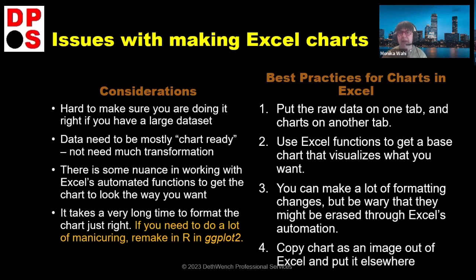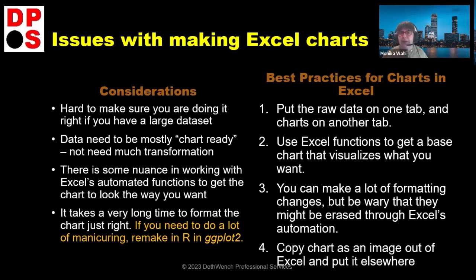If you want to add 95% confidence interval bands or error bars, don't use Excel. Excel is very good for communicating with your team — for example, if you have a lot of missing values in a variable and want to show it to your team, make a quick chart. It takes a long time to format charts right in Excel, so if you're going to do that, you might as well use ggplot2. Here are best practices: put the raw data on one tab and charts on other tabs.